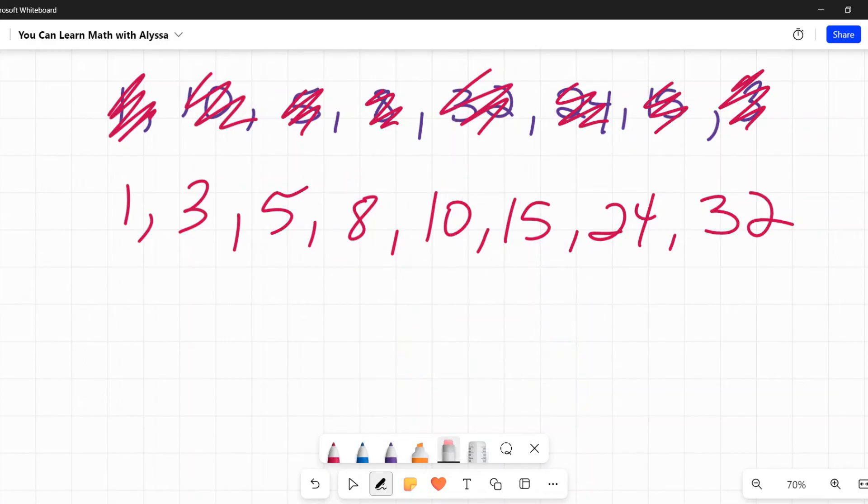And the last one, mode. Mode is the one that appears the most. And if you're going, wait a minute, they all appear only once. That's right. There's no mode. Nothing appears more than once. There is no mode.